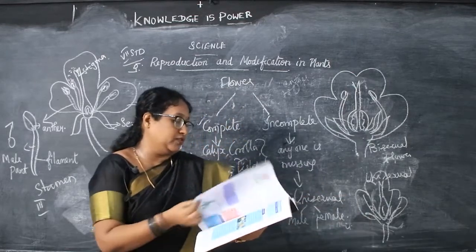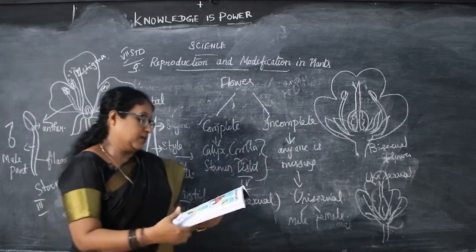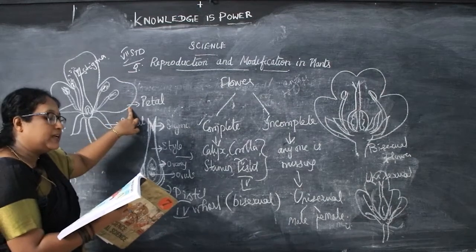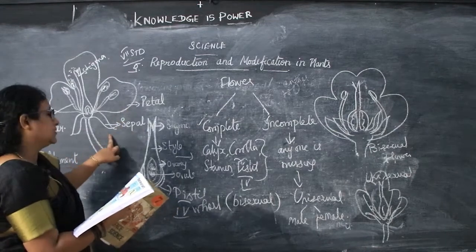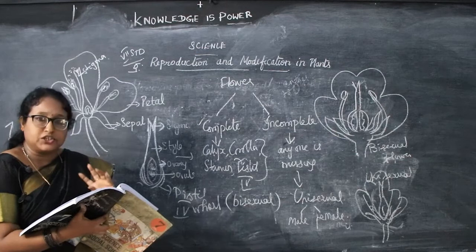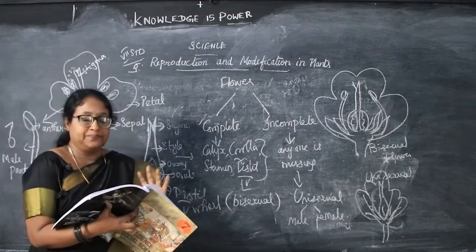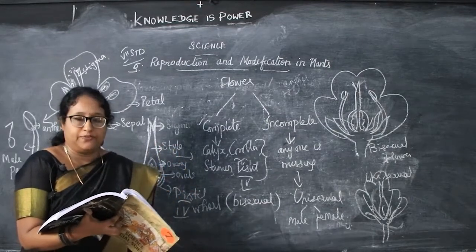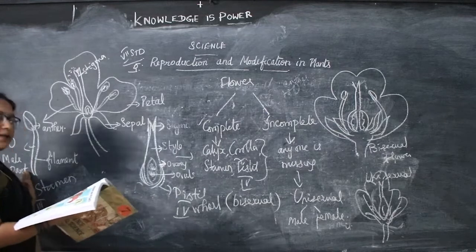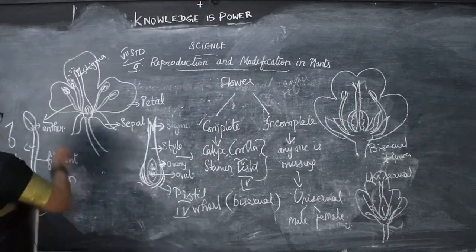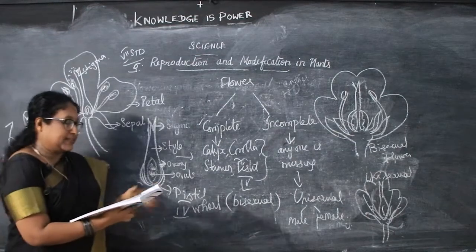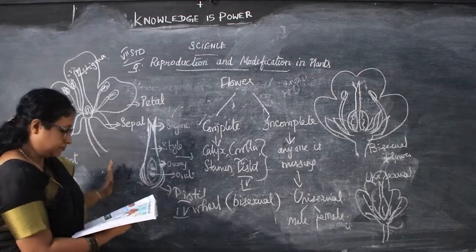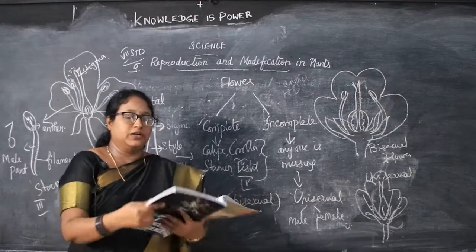To summarize, we learned about the flower. The sepal holds the developing flower bud; the petal attracts insects for pollination. The flower is the reproductive organ of a plant. The stamen is the male part that produces pollen grains. The pistil is the female part containing the ovary, style, and stigma. We will continue in the next class. Thank you.